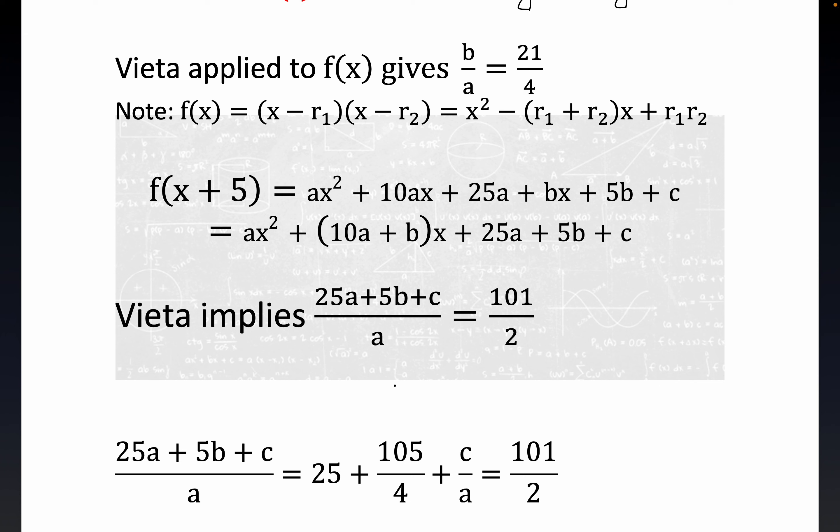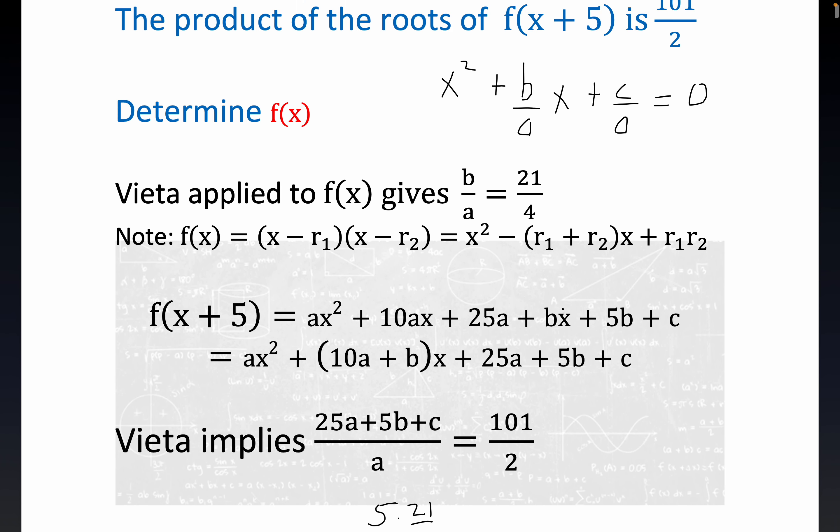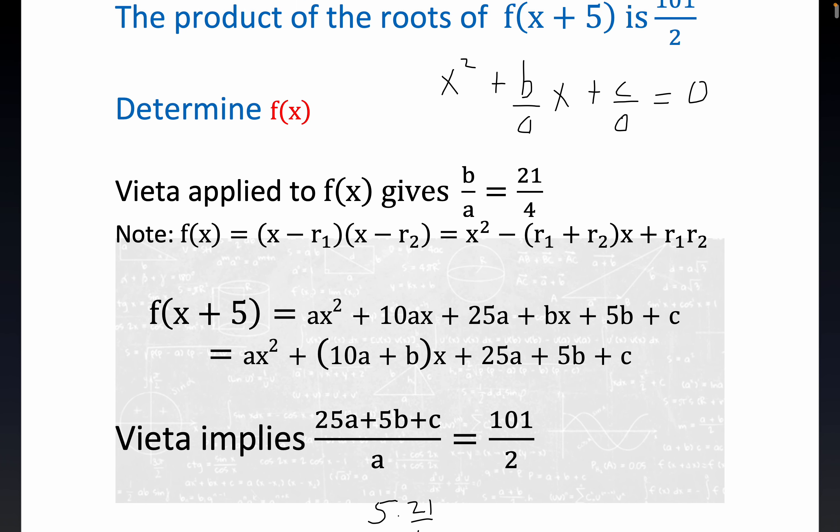So you see, this piece right here is just five times 21 over four. It's this guy right here. And so you see, we're about to figure out what C over A is, which is a good idea because that is the product of the zeros up here.